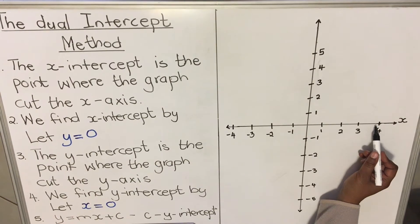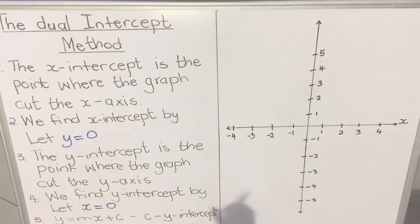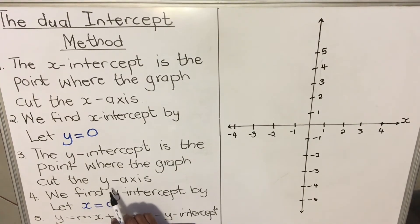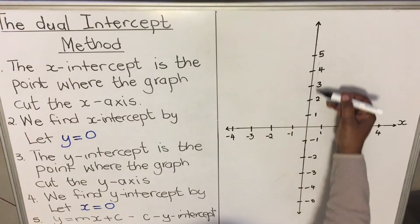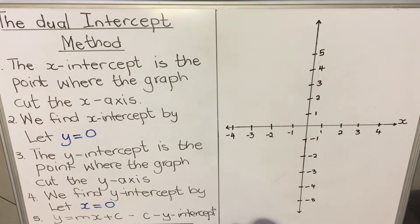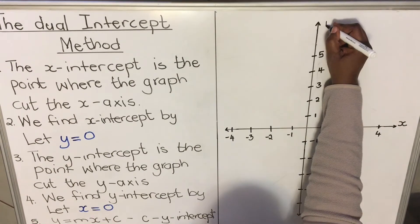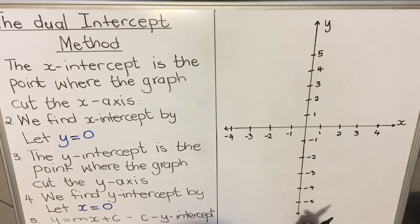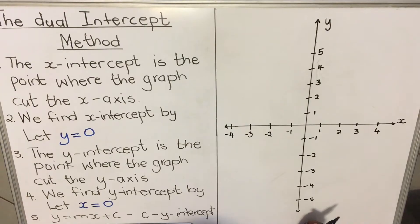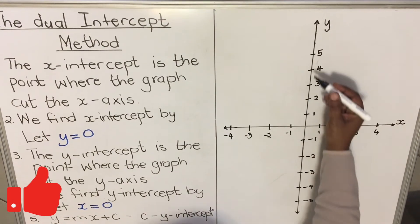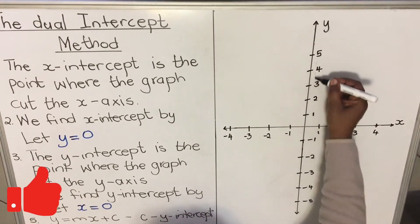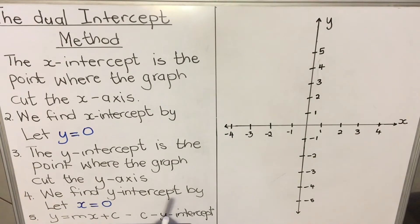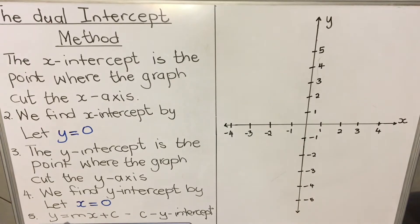The y-intercept is the point where the graph cuts the y-axis. The y-axis is the output value. When the graph cuts anywhere on the y-axis, that is the y-intercept. To find it, we let x equal zero, because on the y-axis x is zero.